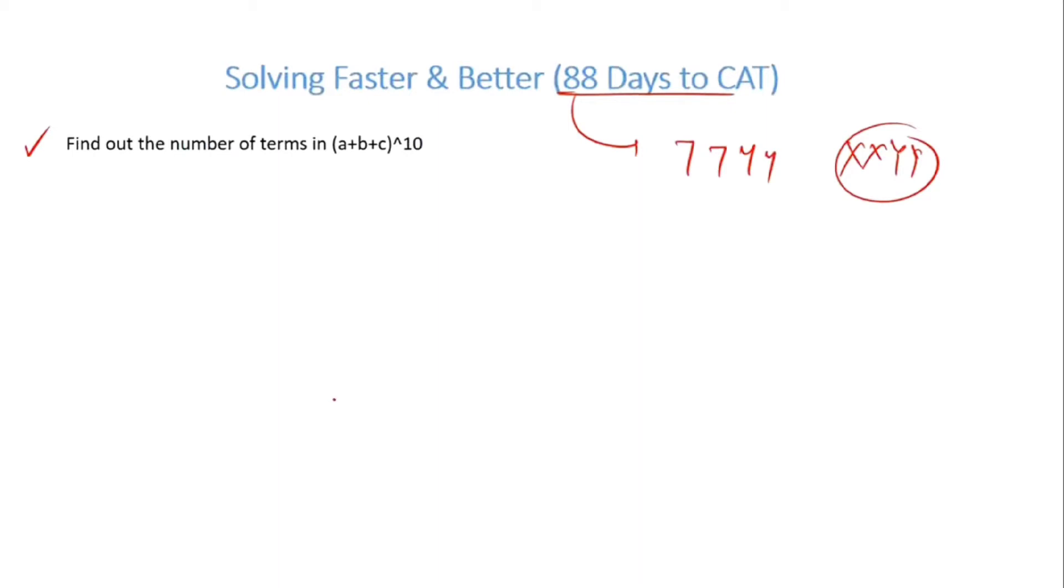We'll do this using two methods. One is based on binomial expansion, and the other one is based on concepts of P and C. So let's see how do we do it using binomial.